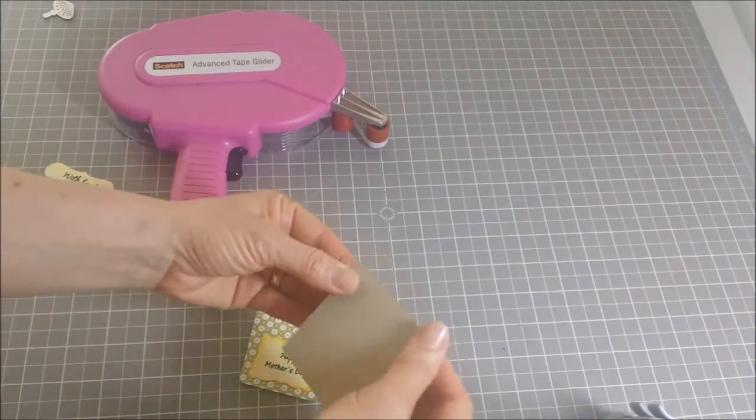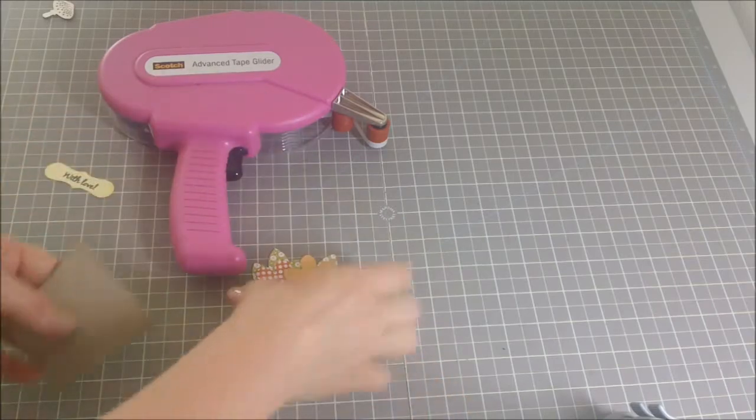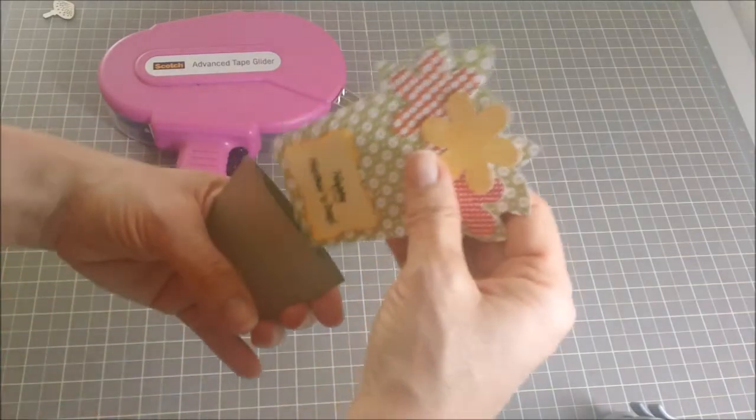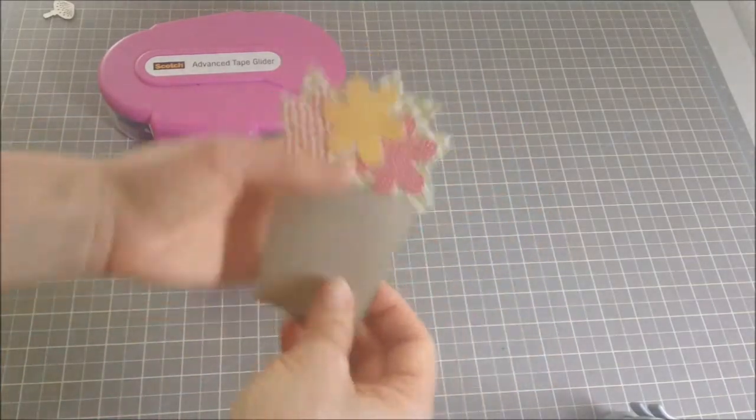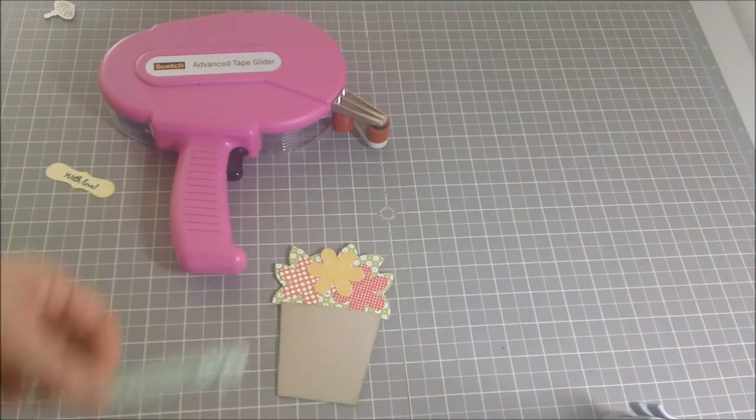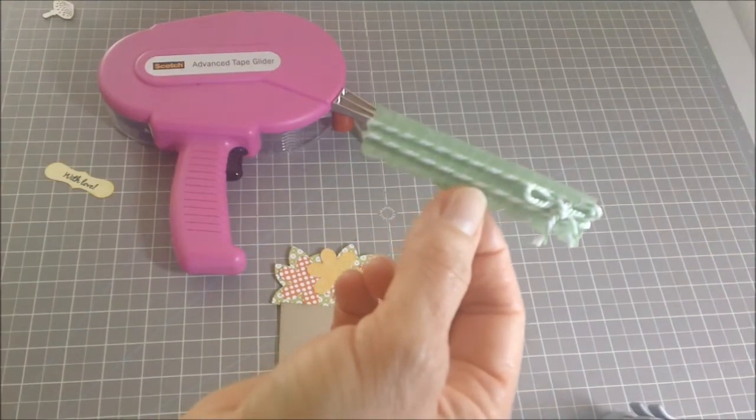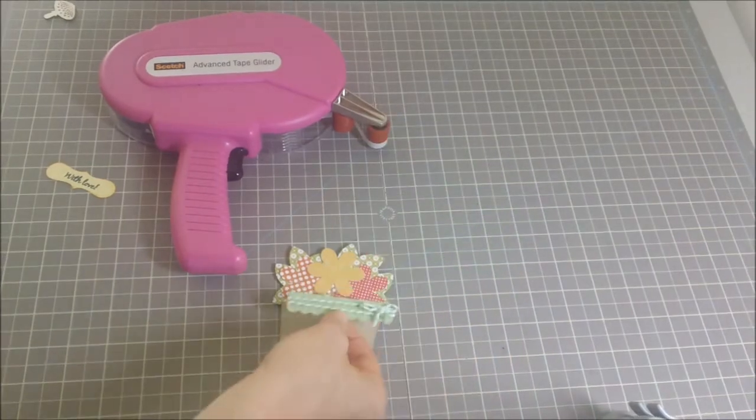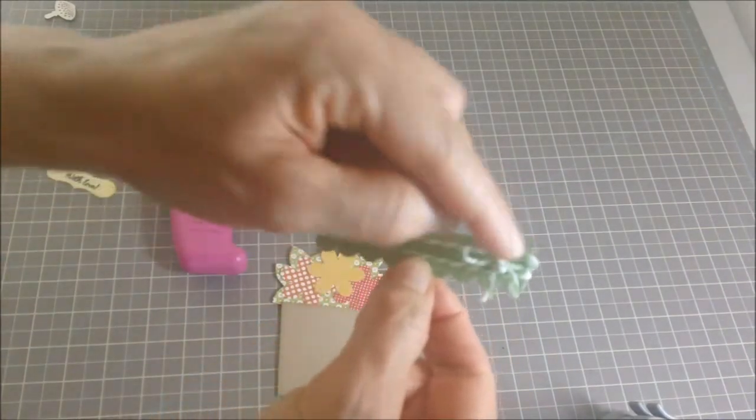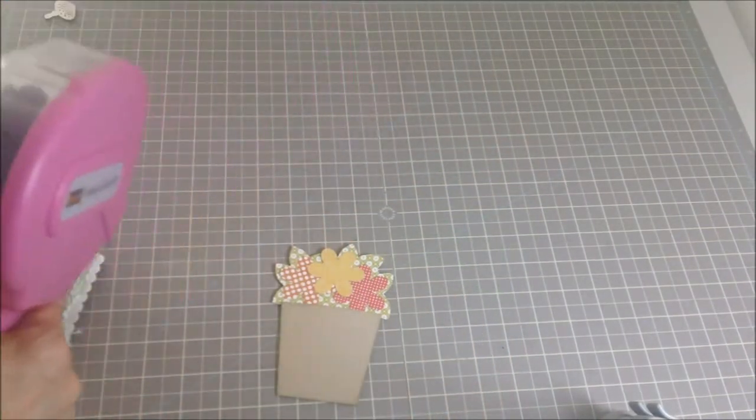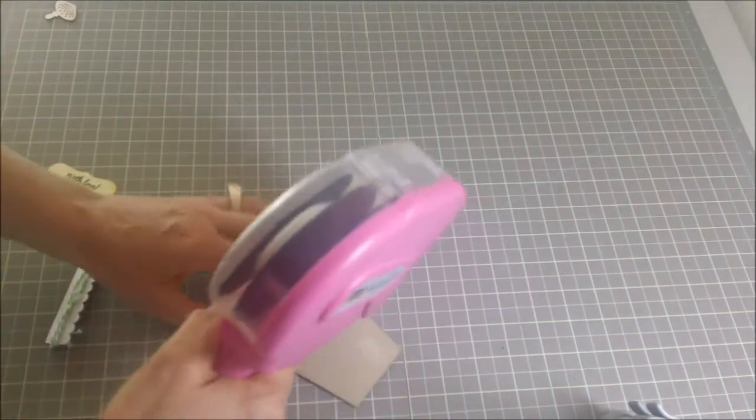Then just press it down like that and this will slide onto here. The next thing is this cute little part that goes in front of the flower pots, this little scallop part. I've tied a little bit of twine on in a little bow which I think is super cute.